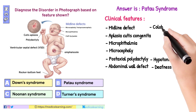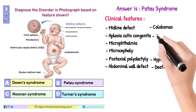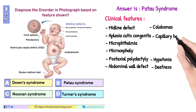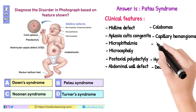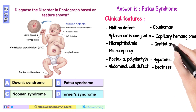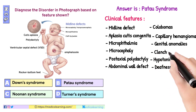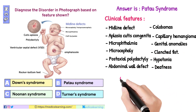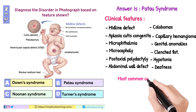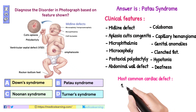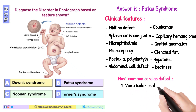The most common cardiac defects in Patau syndrome are: 1. Ventricular septal defect (VSD), 2. Atrial septal defect (ASD), and 3. PDA. The most common cause of death is central apnea.